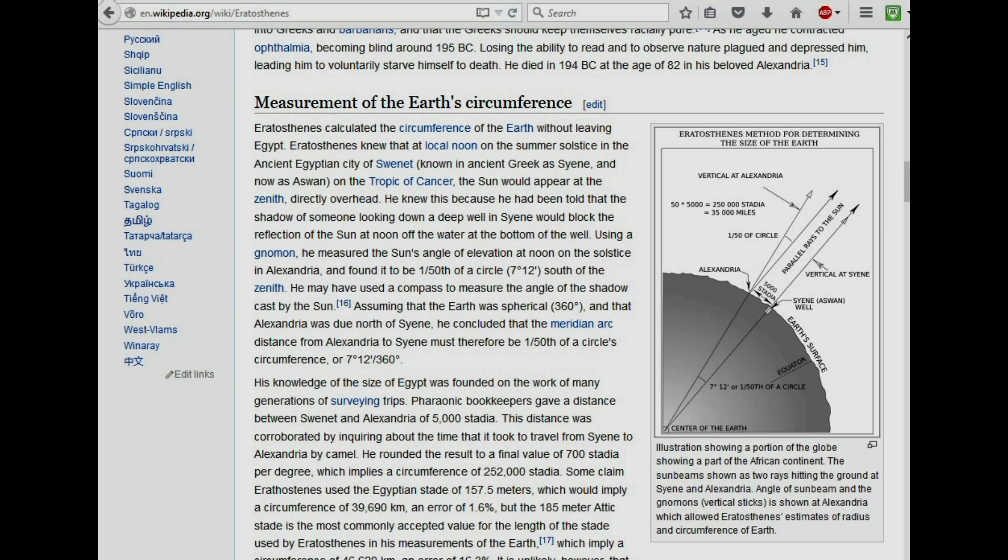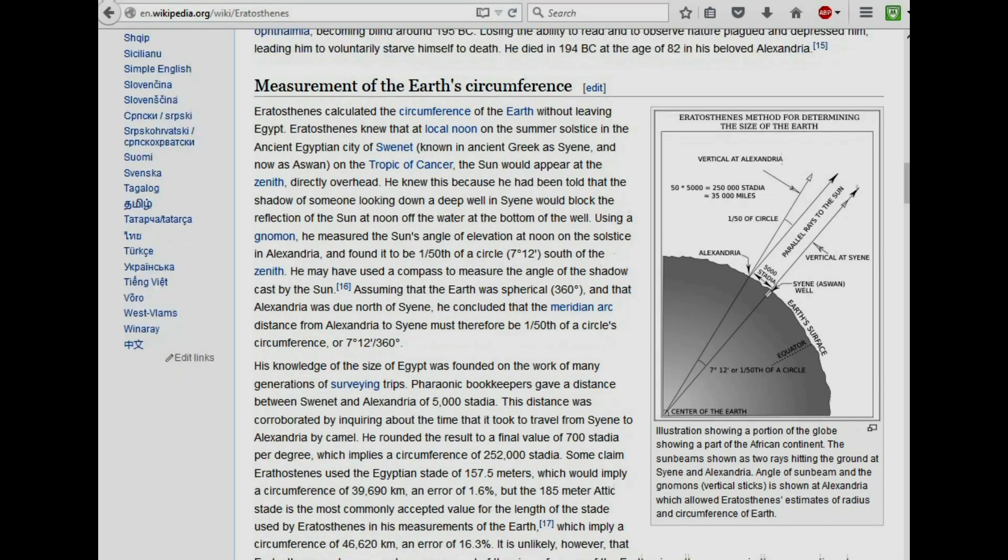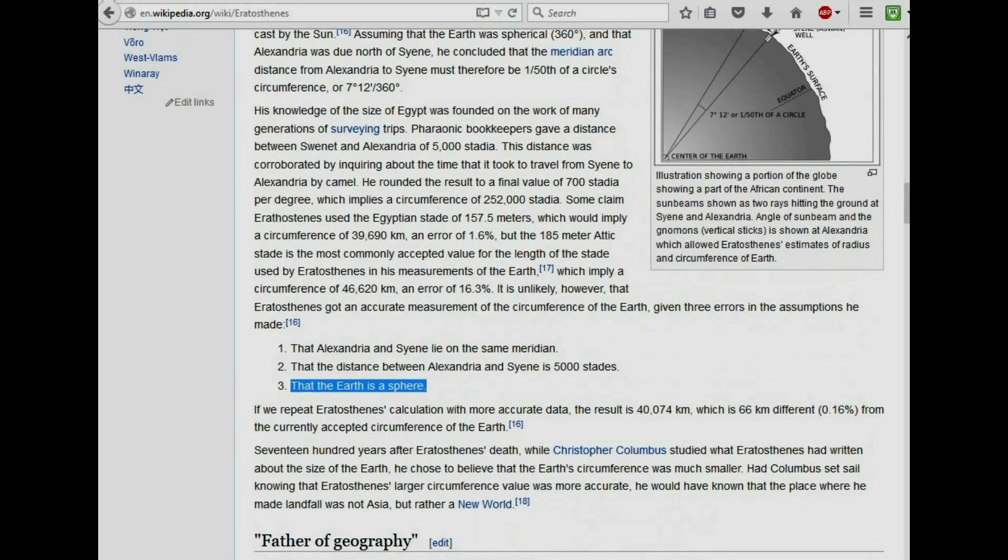Because of the difference between the sun being overhead and the angle of elevation, a shadow being cast some distance away, he was able to calculate using Pythagorean and trigonometry. He was able to calculate the distance between Syene and Alexandria and just multiply that by fifty.